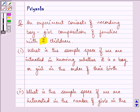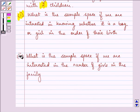The first part which we need to answer is what is the sample space if we are interested in knowing whether it is a boy or girl in the order of their birth.